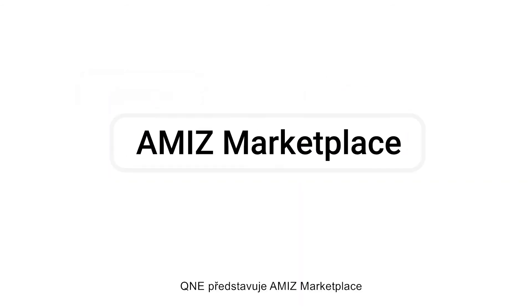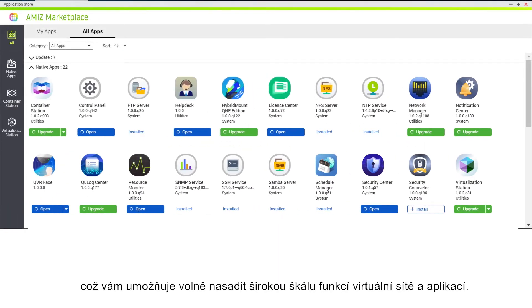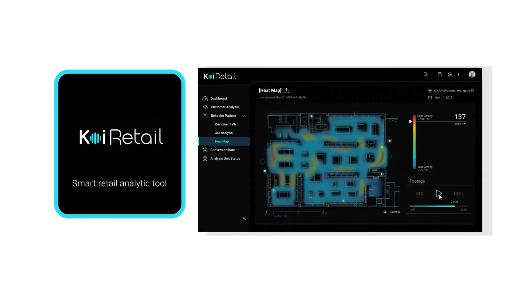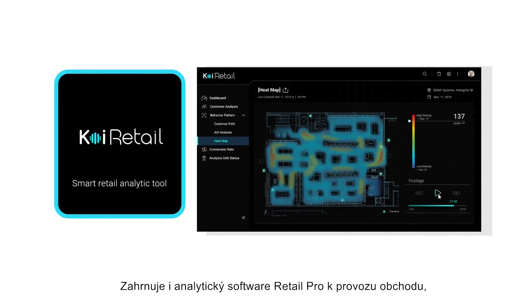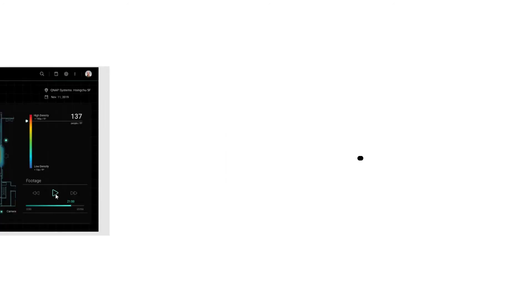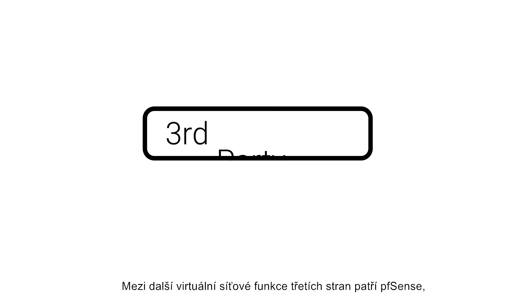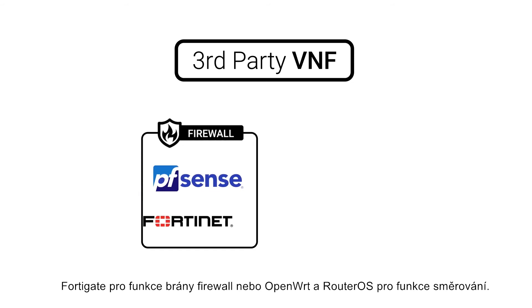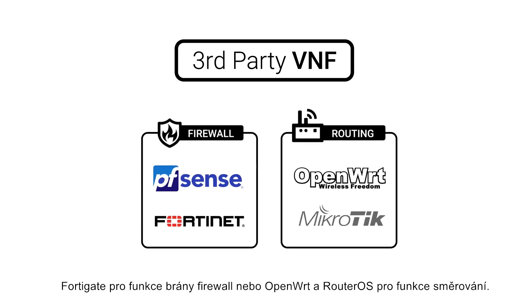QWAN-E features the Amiz Marketplace, which enables you to freely deploy a wide array of virtual network functions and applications. This includes the RetailPro store traffic analytics software, which can help retailers analyze visitor behavior based on their shopping journey. Other third-party virtual network functions include PFSense, FortiGate for firewall functions, or OpenWRT and RouterOS for routing functions.